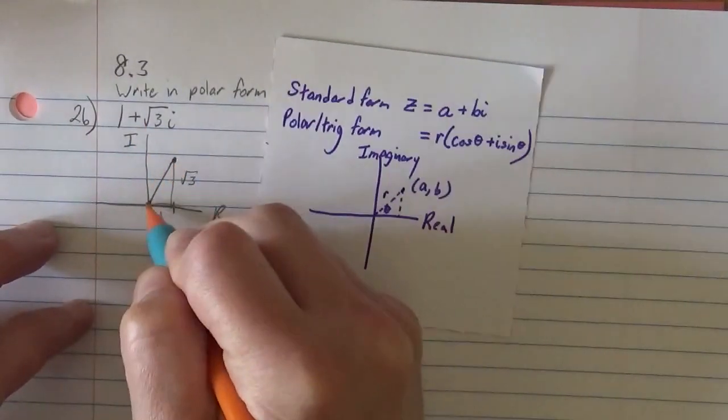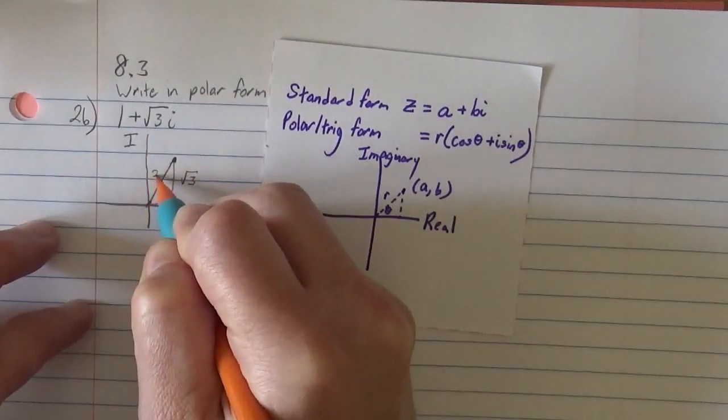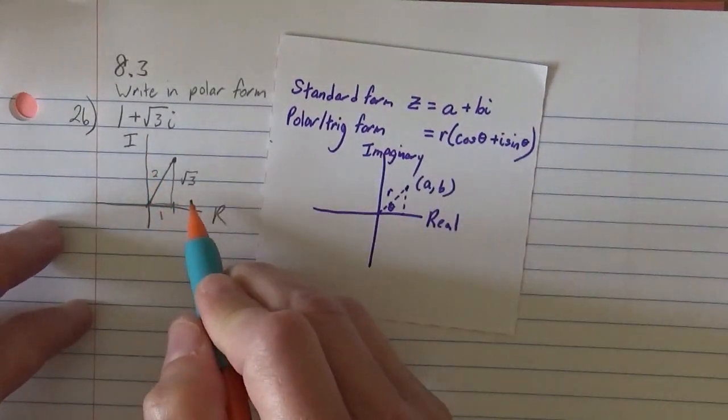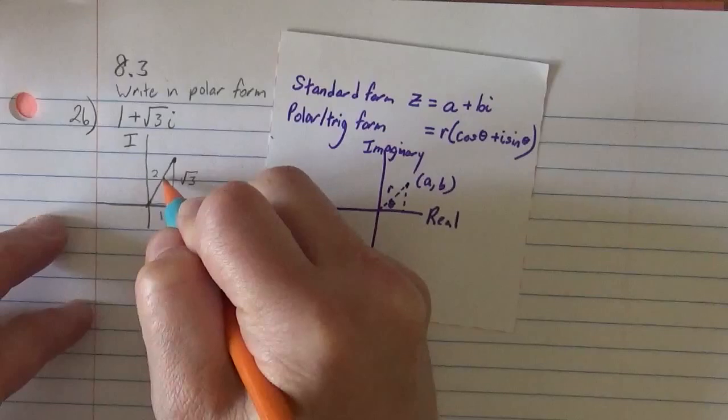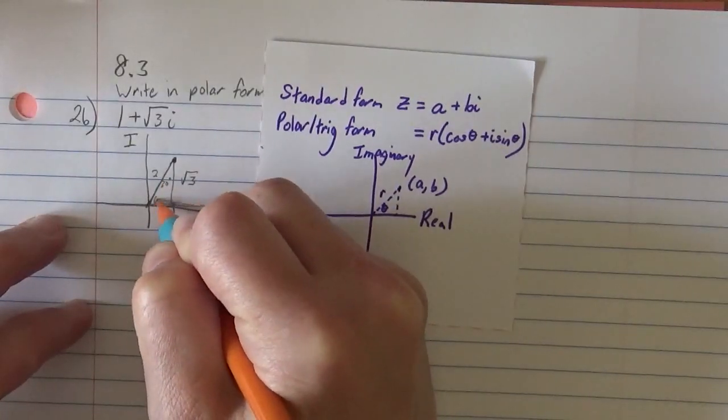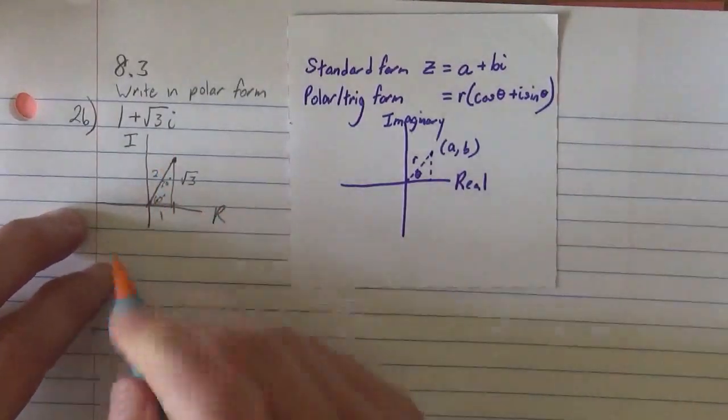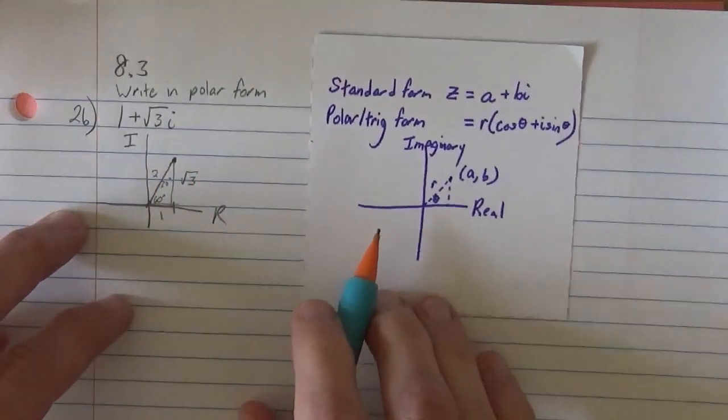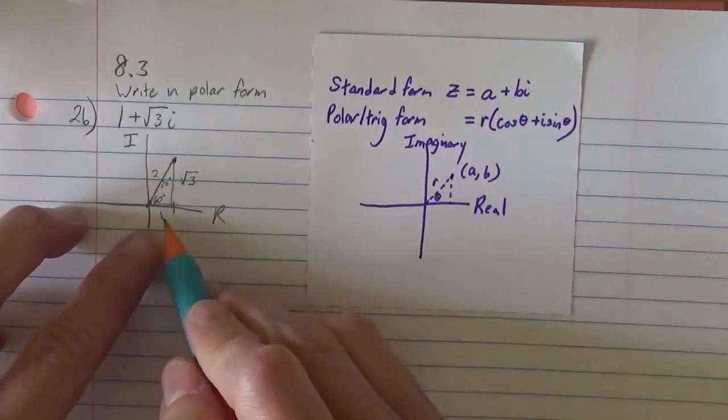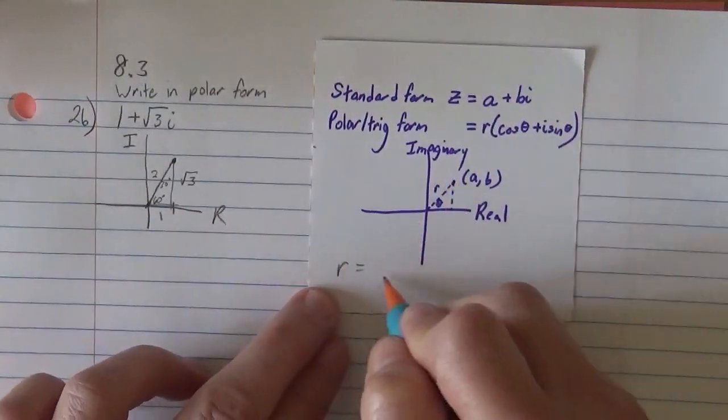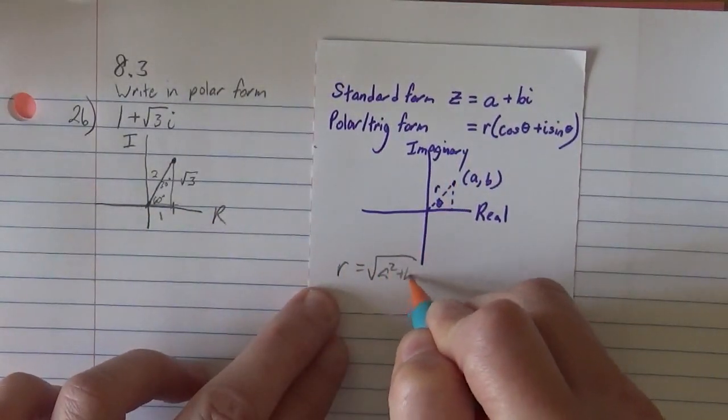If we wanted to get this length, you could do it with Pythagorean theorem. Or you could recognize this as a 30-60-90 triangle where this is 30 and this is 60. The 1, 2, root 3 should be familiar to us. But if you don't know it, you can always do that the radius is the square root of a squared plus b squared.